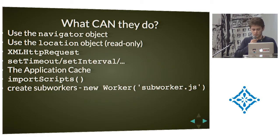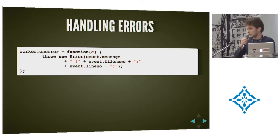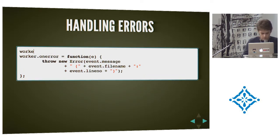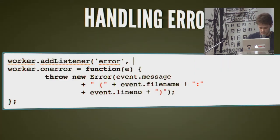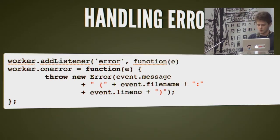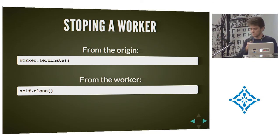This is how you'd handle errors after creating a worker — just register a callback on onerror. In JavaScript you could also use addEventListener and pass in 'error' and a handler function. To stop a worker, you can call terminate from the origin or call close from inside the worker.